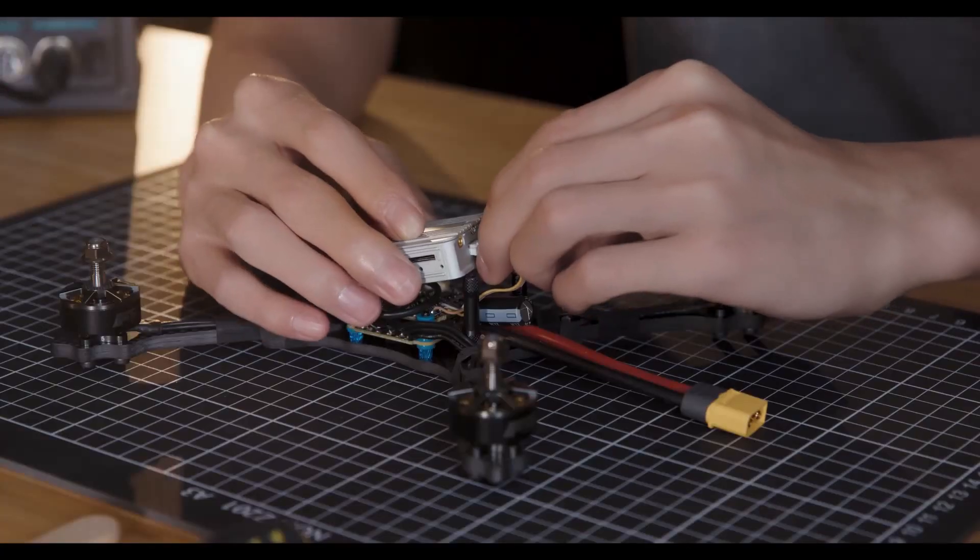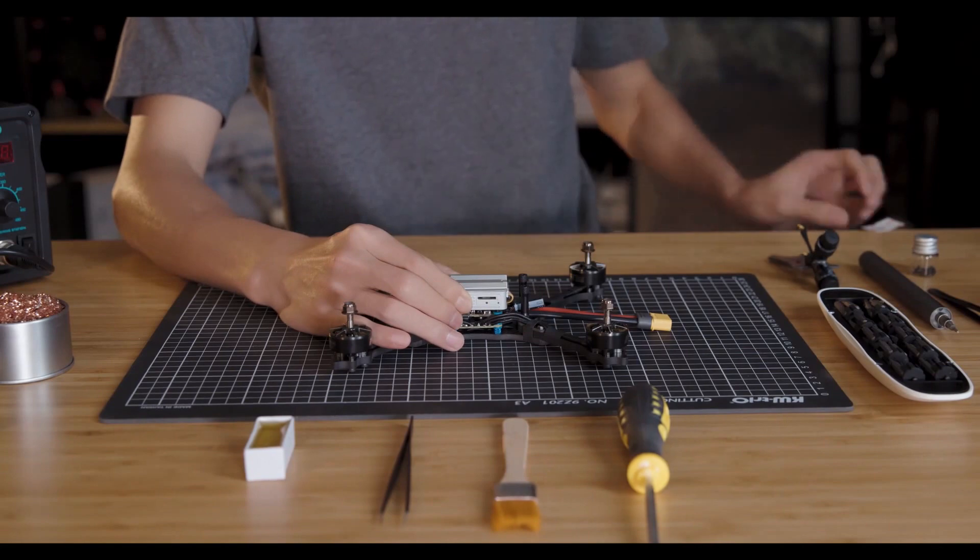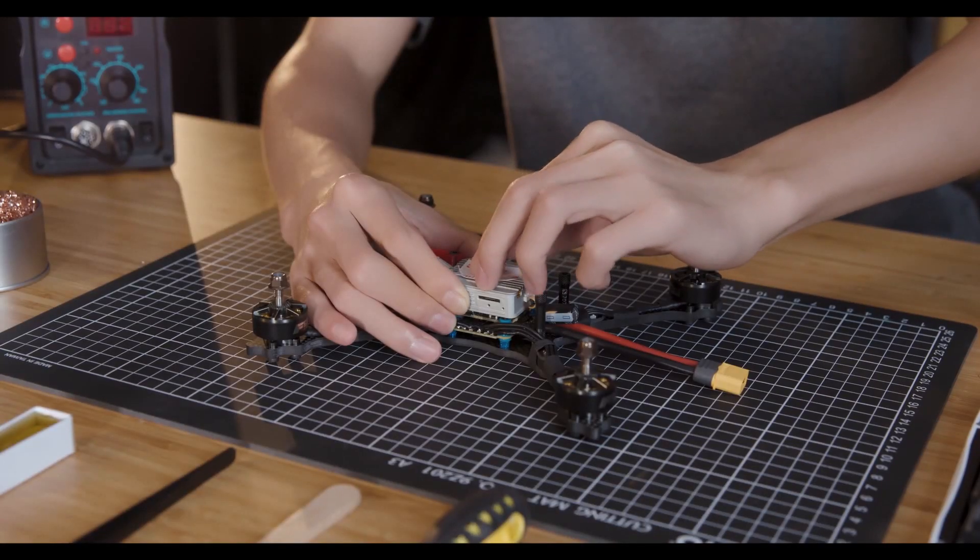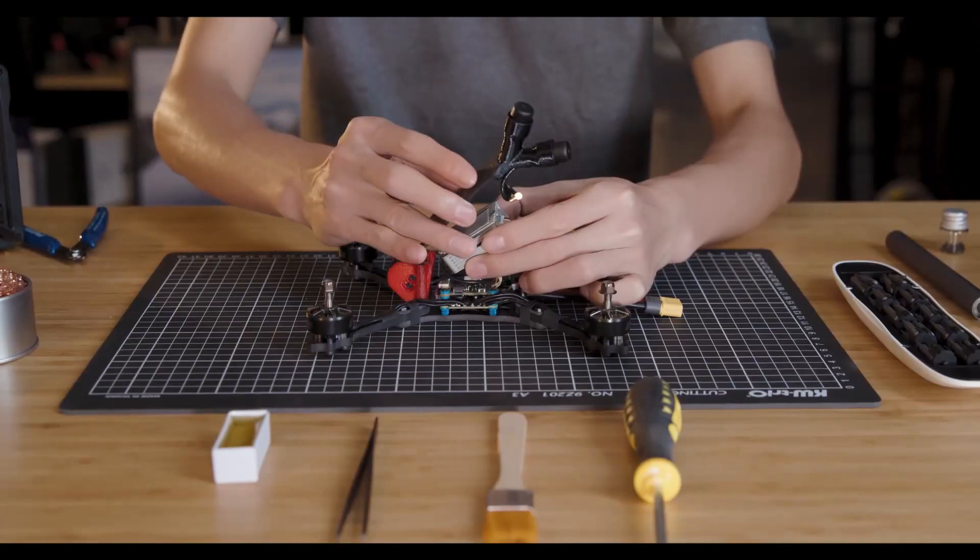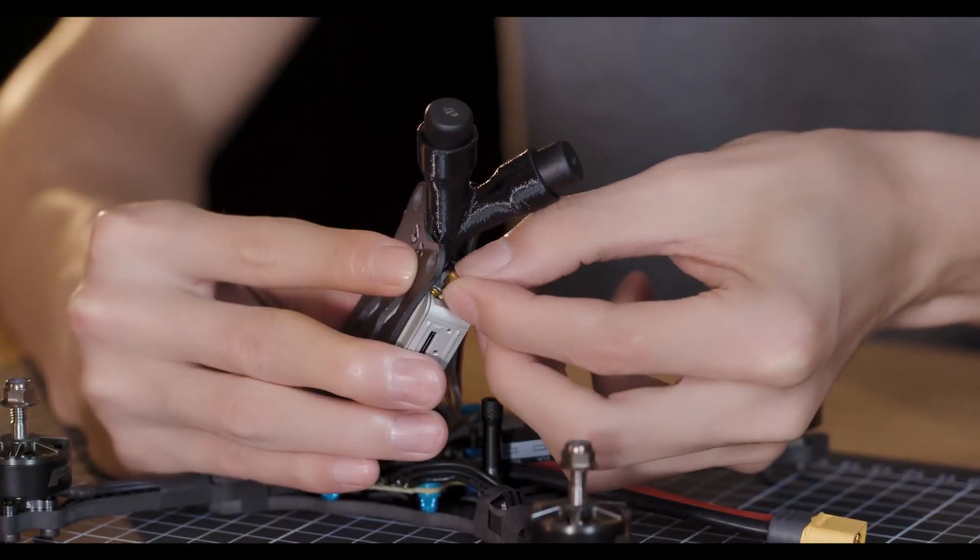Now, connect the cable with the air unit. Use the 3M double-sided adhesive tape to fasten the air unit to the top of the carbon plate. Connect the antenna with the air unit.